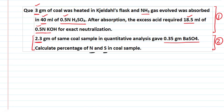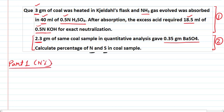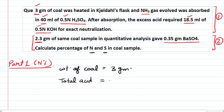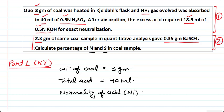First we will solve Part 1, where we calculate the percentage of nitrogen. Let's see what values are given for nitrogen percentage. The given values are: weight of coal = 3 grams, total acid volume = 40 mL, and normality of acid (which we consider as N1) = 0.5N.